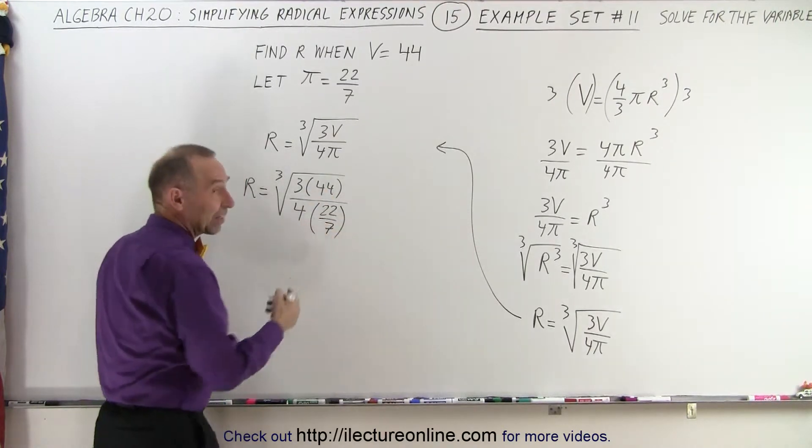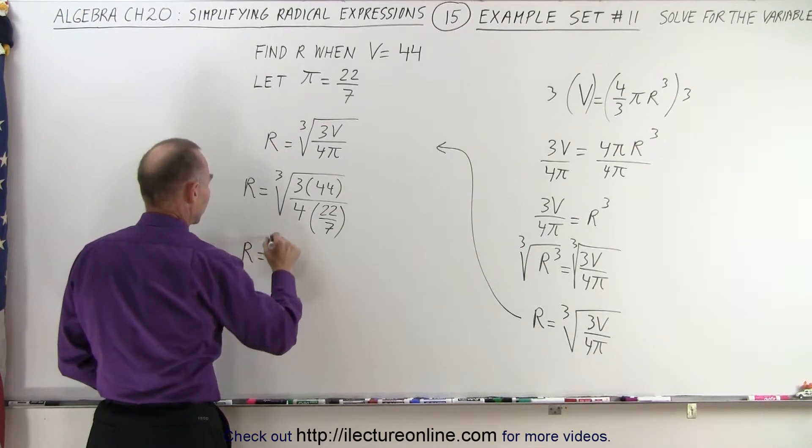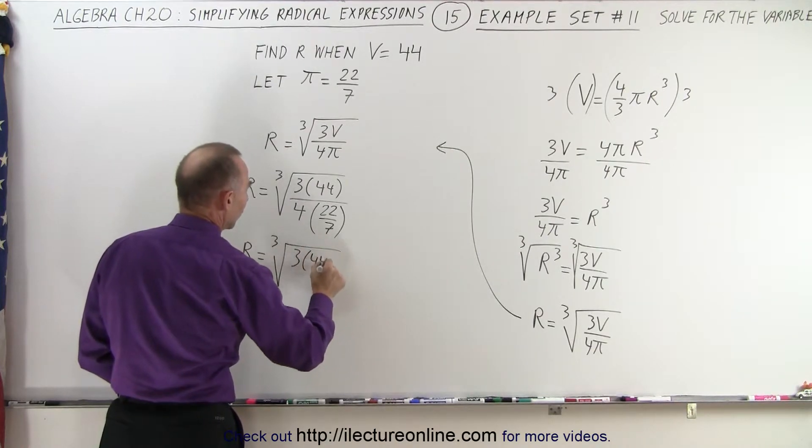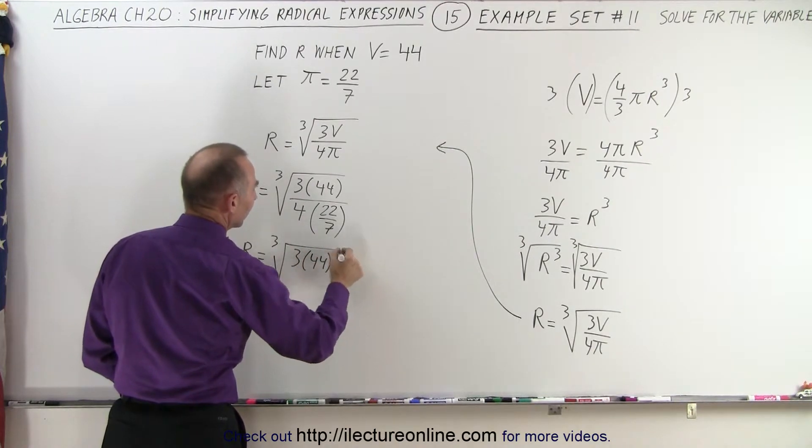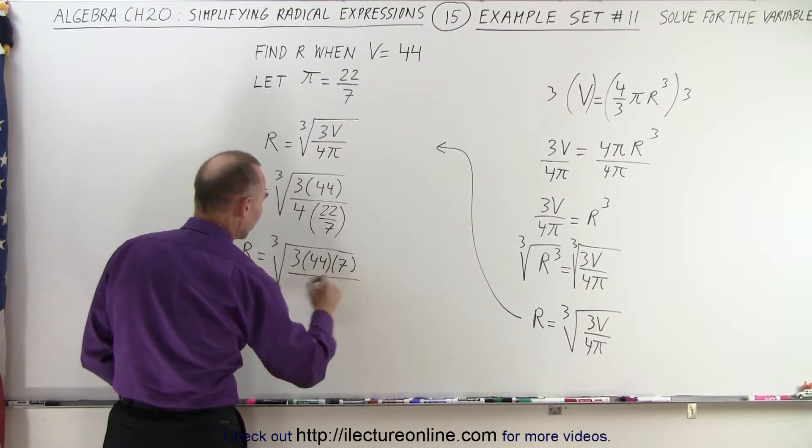So when I divide by a fraction, it's the same as multiplying by its inverse. So we can say that r is equal to the cube root of 3 times 44 times 7. Because dividing by 22 over 7 is the same as multiplying by 7 over 22. So this becomes 4 times 22.